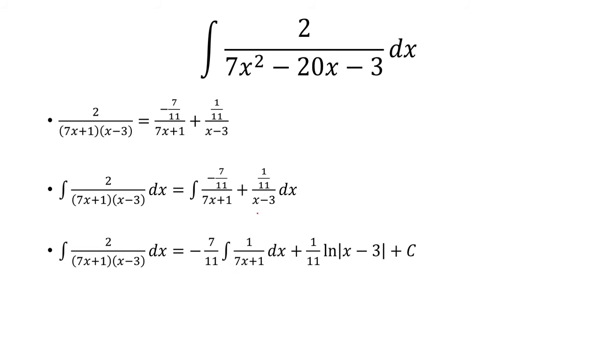So the thing here is 1 over 11 over x minus 3 is very simple. That's just going to be 1 over 11 ln of x minus 3. But because the coefficient here of x is not 1, I'm going to have to do a u substitution. So focusing on just this integral, I can pull out the negative 7 over 11 and let u be the denominator. So then du will be 7 dx.